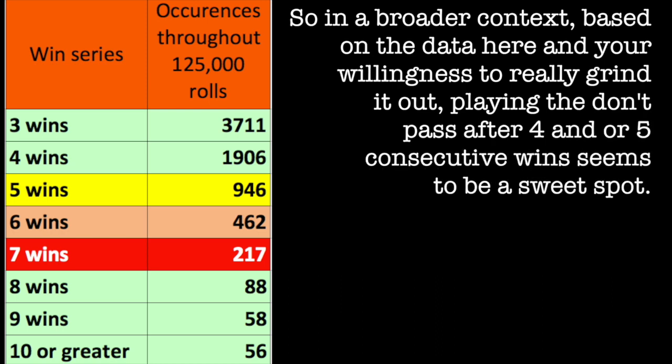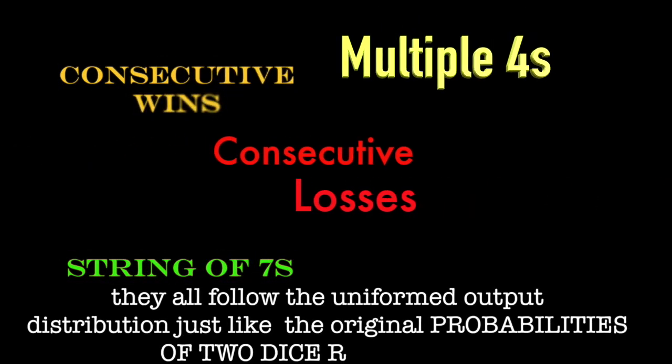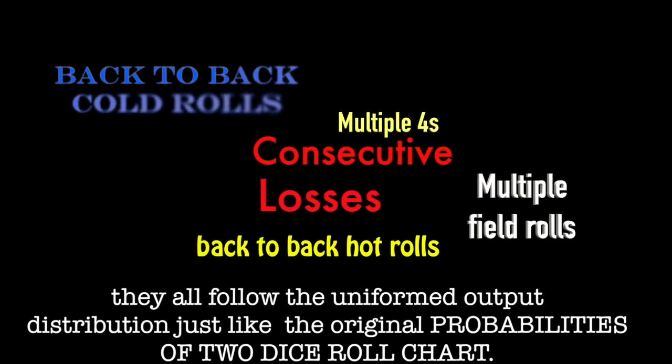So in a broader context, based on the data here and your willingness to really grind it out, playing the don't pass after four and or five consecutive wins seems to be a sweet spot. When you start looking at different connected patterns, they all follow that uniformed output distribution, just like the original probabilities of two dice roll chart.